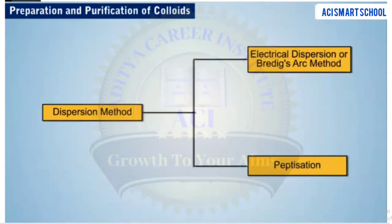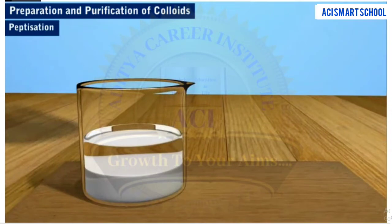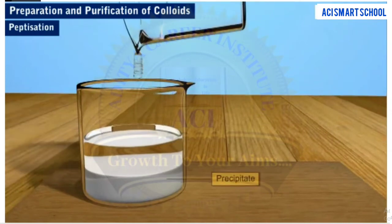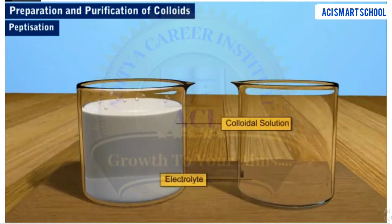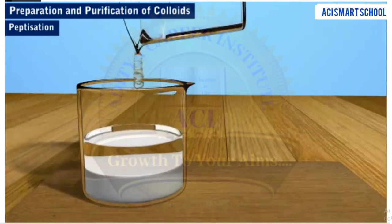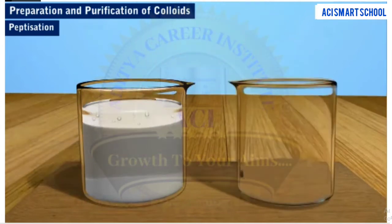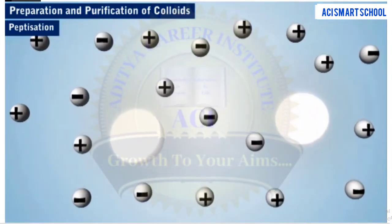We will now discuss the preparation of salts by the peptization method. Peptization is defined as the process of converting a freshly prepared precipitate into colloidal form by adding a small amount of a suitable electrolyte. The electrolytes used for this purpose are called peptizing agents. This process involves the preferential adsorption of suitable ions from the electrolyte by the particles of the precipitate to form charged species.